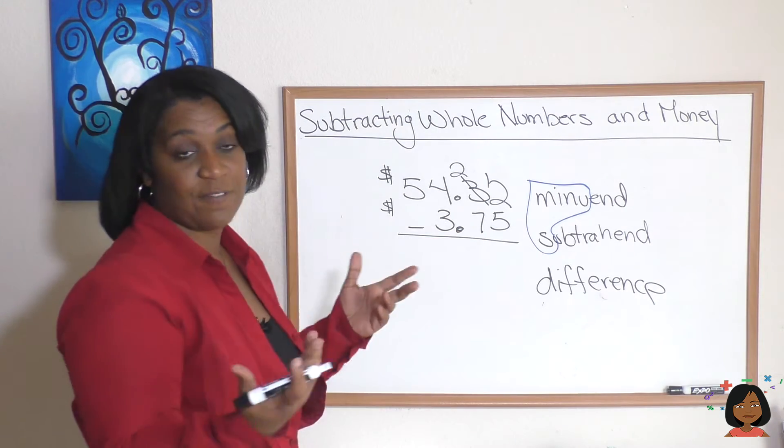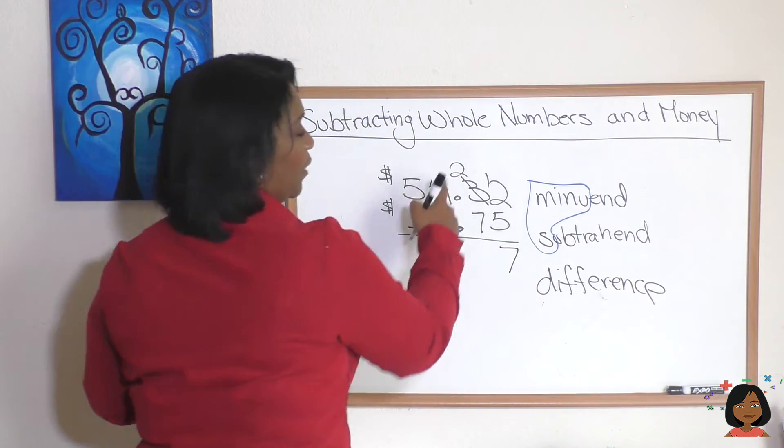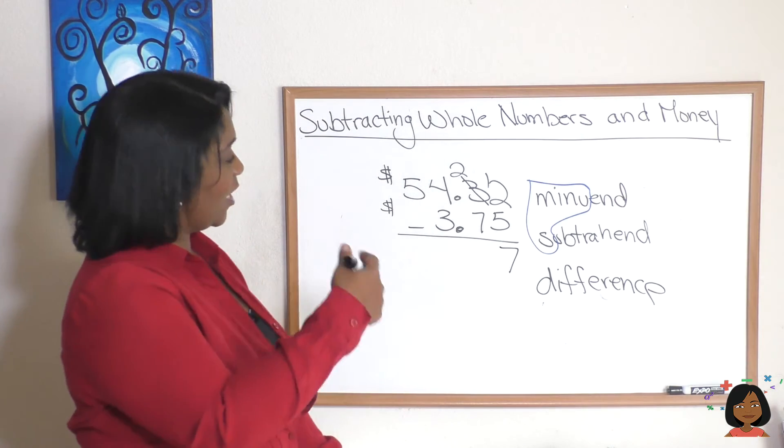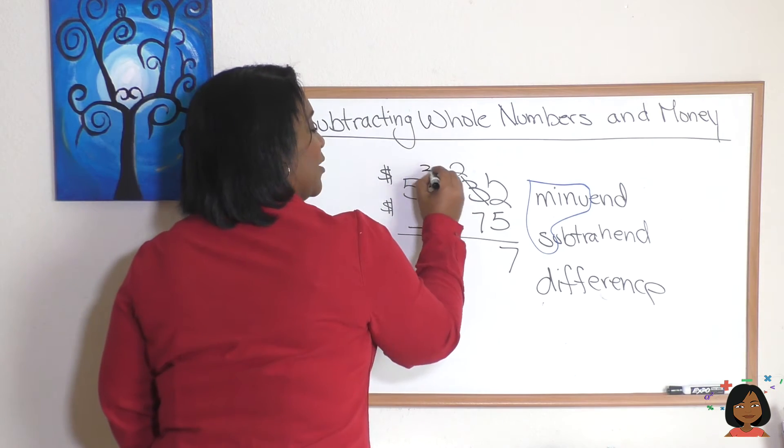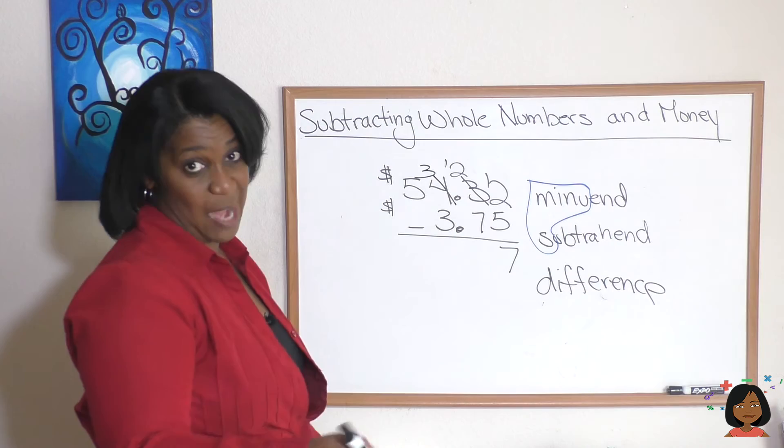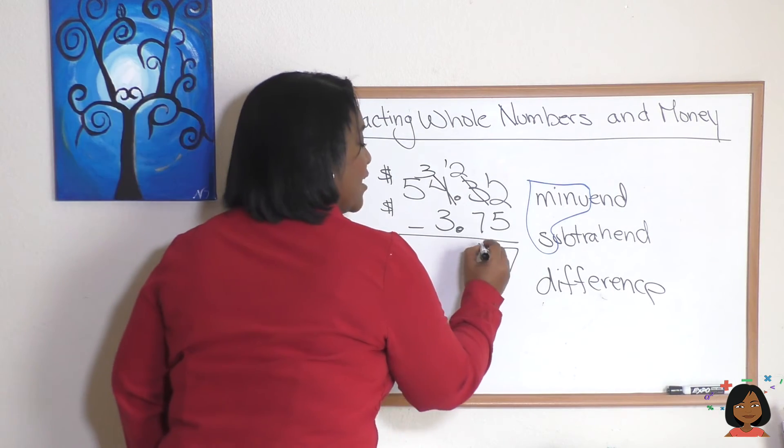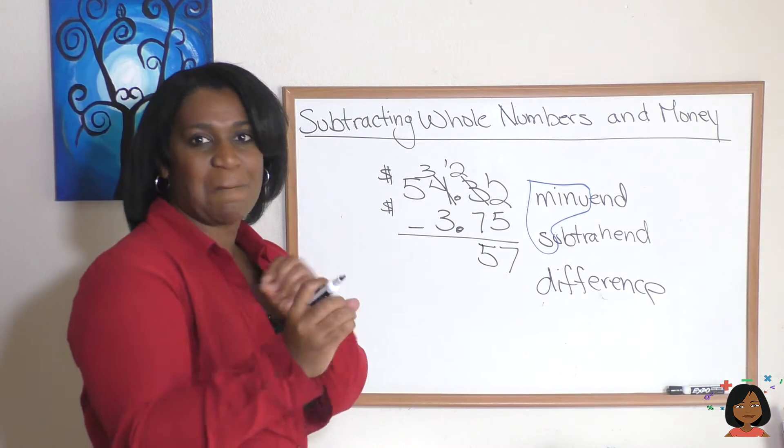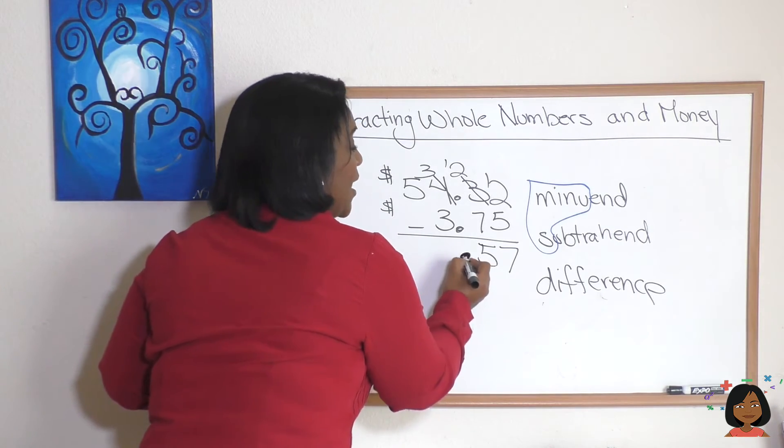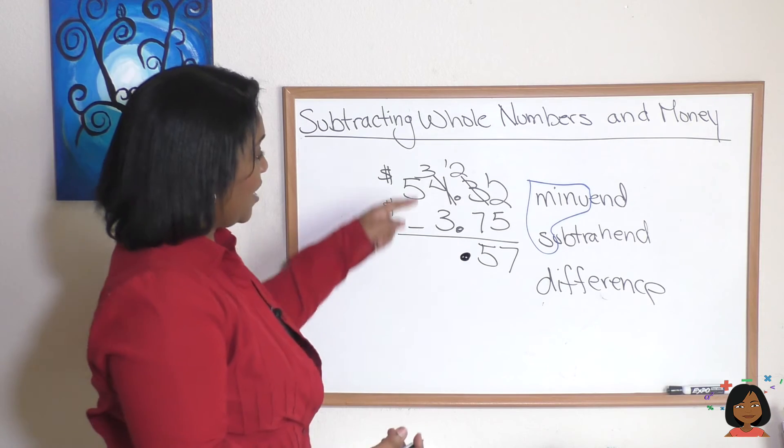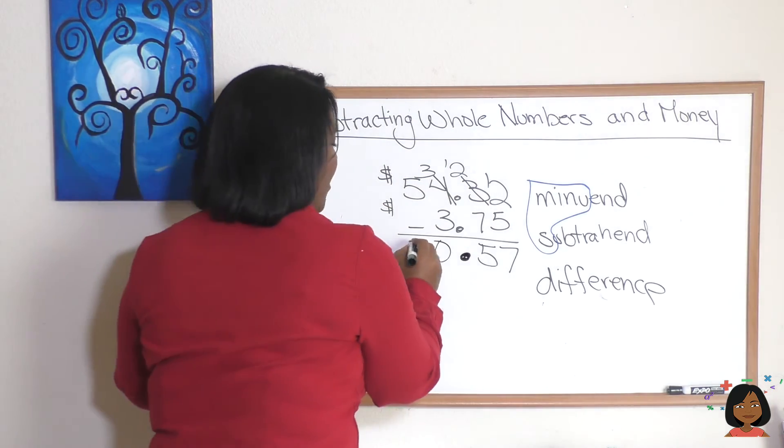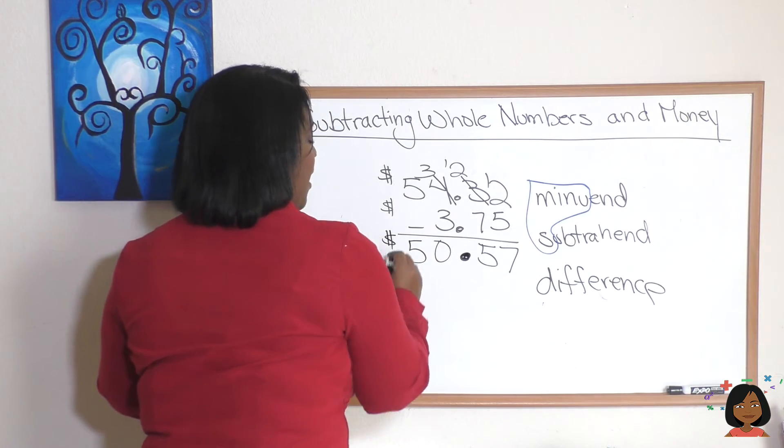Here we go, 12 minus 5, now we can do it, is 7. Oh wait, we hit the same problem again, 2 minus 7, can't do it. So we're going to borrow again and we're down to a 3, this goes to a 12, 12 minus 7 this time is 5. And you know me, I hit my decimal point so I want to make sure that I don't forget them, so I'm going to go ahead and just write that decimal right now and keep it going. 3 minus 3 is 0, 5 minus nothing is still 5, and I'm going to add my dollar sign on. We've got $50.57.